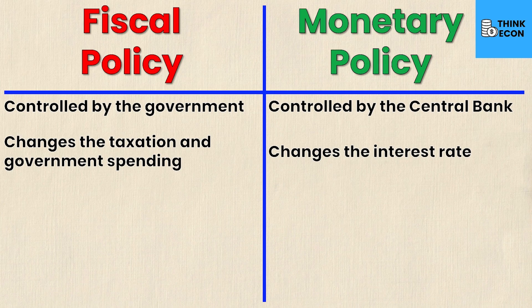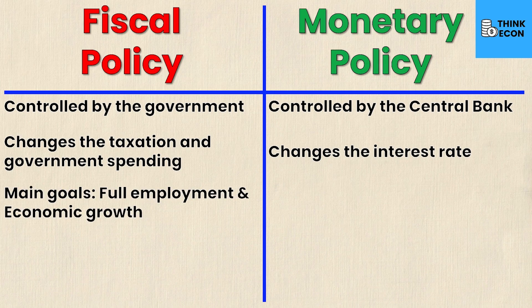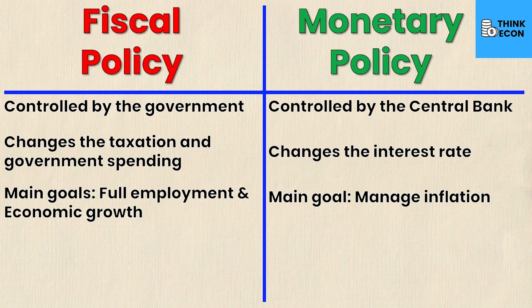The third difference is that the main goals of fiscal policy are full employment and economic growth, while the main goal of monetary policy is to manage inflation. Full employment and economic growth are very government-heavy goals, and managing inflation is the biggest cause for changing the interest rate in the first place — so a very central bank oriented goal as well.